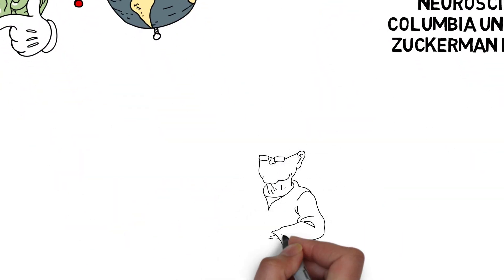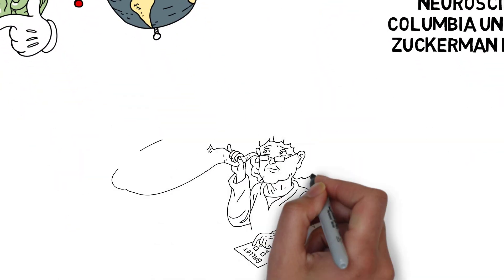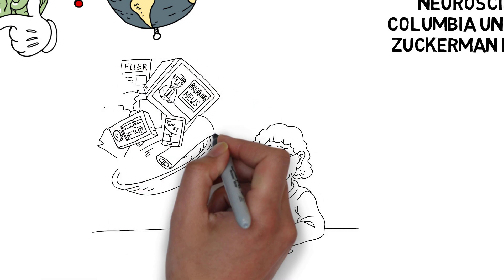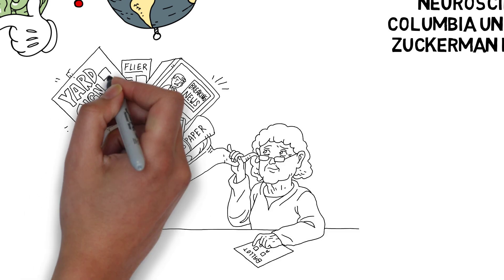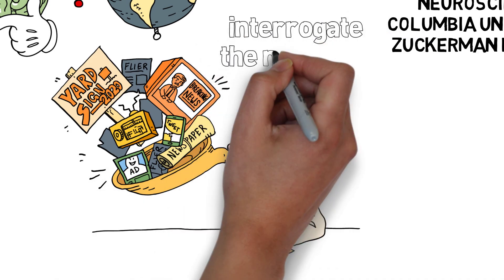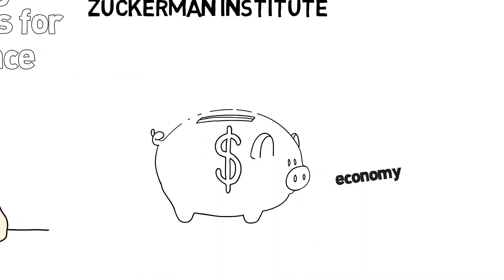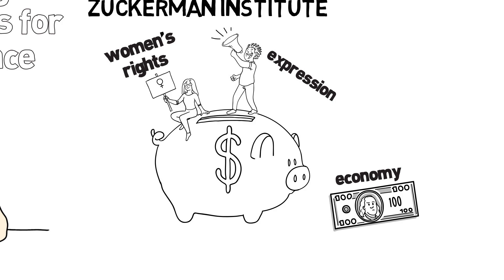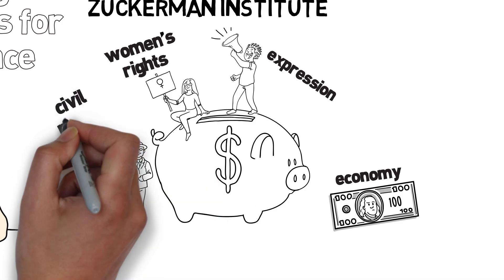When you vote, you don't just say I'm going to vote for candidate A or candidate B. Let me just open my ears and eyes to newspapers and the radio and pour it all in. No, you interrogate the news for evidence bearing on whether this person cares about the economy in certain ways, whether they care about issues that matter to you in terms of freedom of expression, women's rights, civil rights.